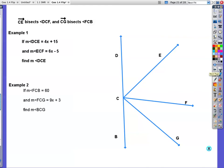Ray CE bisects angle DCF. So here's your ray, CE, and you're hearing the word bisect. So I'm going to go ahead and say angle DCF is bisected. I automatically get to put in my congruency markings.